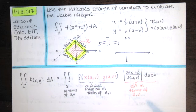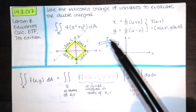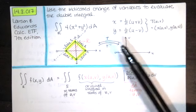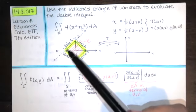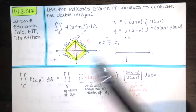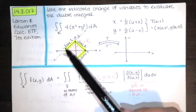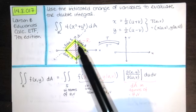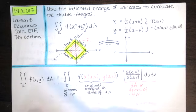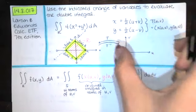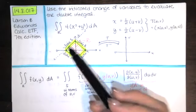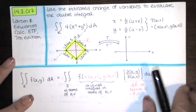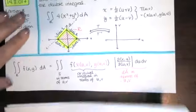The first thing we typically do is find the image of region R under the transformation T inverse. We typically do that by looking at one line at a time. Different textbook authors handle this differently — they often just look at the transformation of each point. But I really like to think about the transformation taking one line and transforming it into another line. So we'll do that one little line segment at a time.